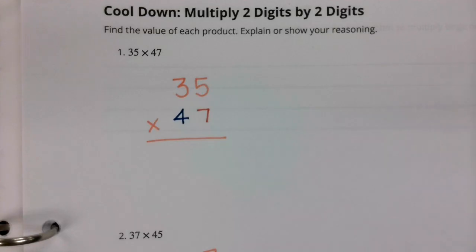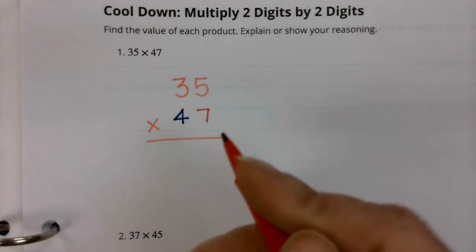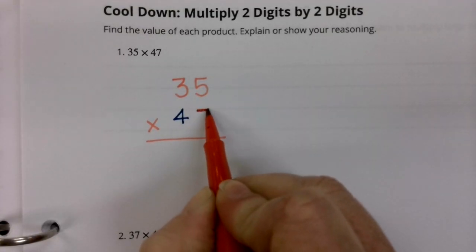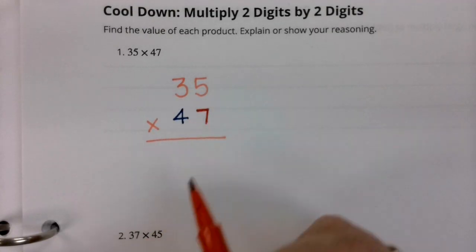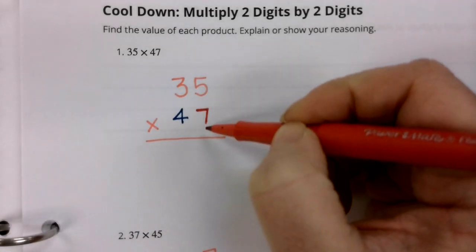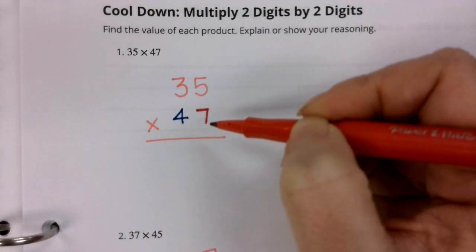We are going to be using the standard algorithm, which we have been practicing throughout this year in illustrative math. We're starting with our seven being the center of this multiplication problem. We're going to do seven times five and then seven times three. So let's get started.